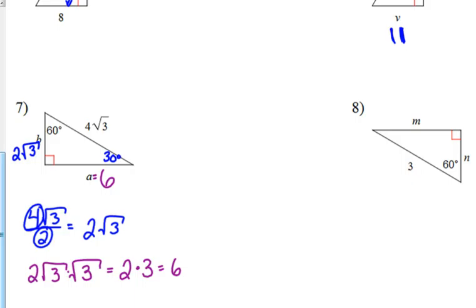For number 8, we're given the hypotenuse equal to 3. The side across from 30 is half that. Since 3 is not evenly divisible by 2, we write it as 3 over 2, so N equals 3 over 2. For the side across from 60, we stick the square root of 3 on that, so it equals 3 square root of 3 over 2.